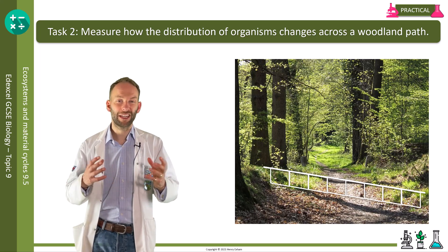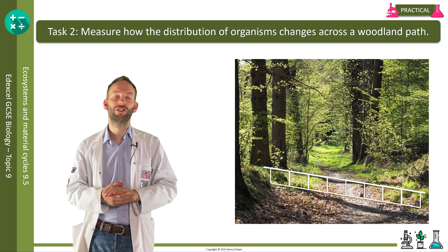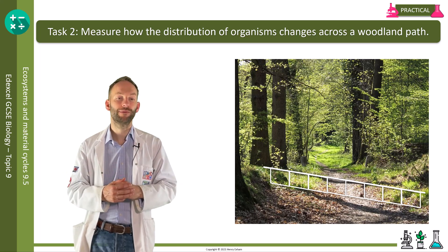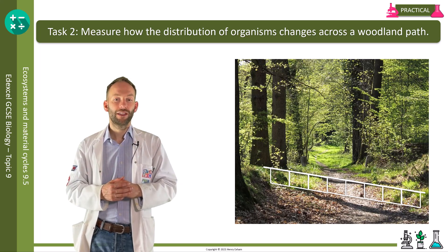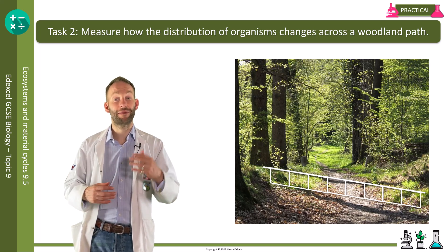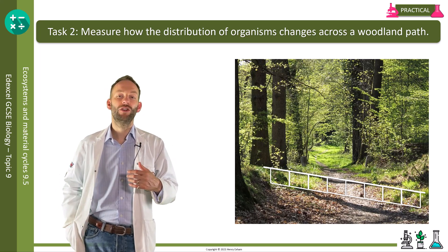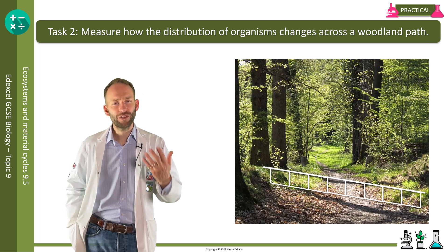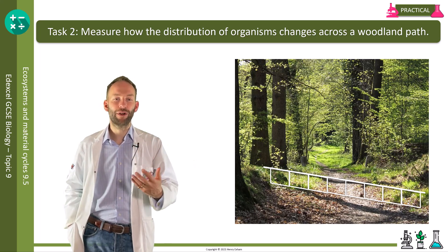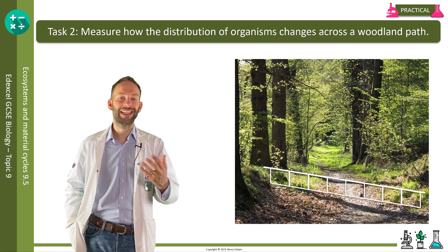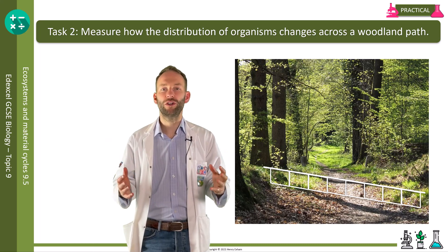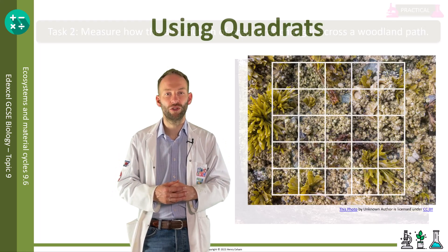If you're counting something like grass where you can't count individual organisms, then you would record the percentage of the quadrat covered. For each quadrat you also take abiotic readings — maybe light intensity, temperature, or soil pH. Once you've got your data, you plot a graph of the abiotic factors you're interested in against each quadrat position to see if there is a correlation. Here is a quadrat placed on a rocky shore.